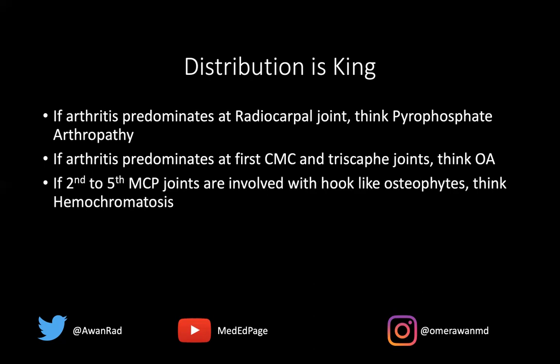If you were to have hook-like osteophytes at the second through fifth MCP joints, then you want to think about hemochromatosis, which can also be associated with chondrocalcinosis. If hook-like osteophytes are limited to just the second and third MCP joints, that would be more consistent with pyrophosphate arthropathy, because hook-like osteophytes in pyrophosphate arthropathy are usually confined to the second and third MCP joints, whereas in hemochromatosis they typically occur at the second through fifth MCP joints.